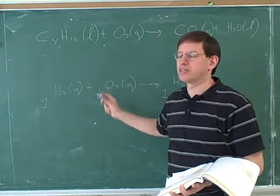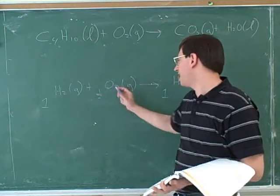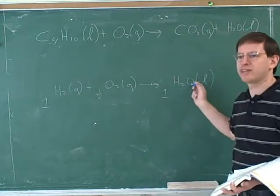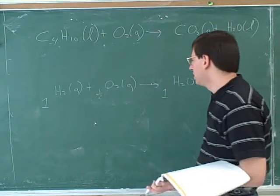We saw earlier you could use algebra to work this out. Or you could just use trial and error. Is one half times two equal to one times one? Yes. So that works. Okay.